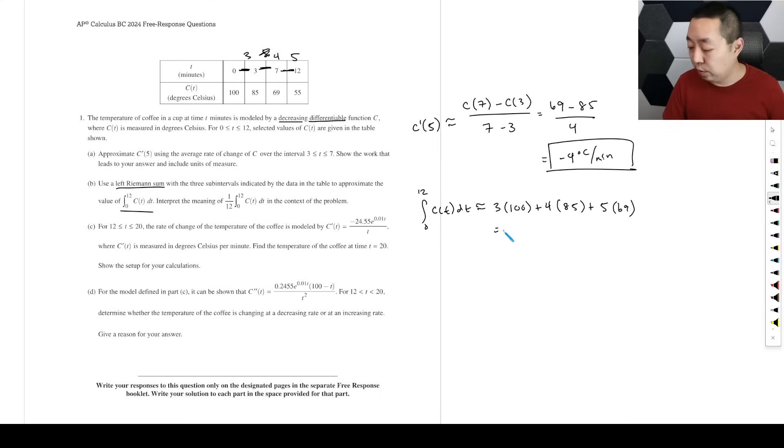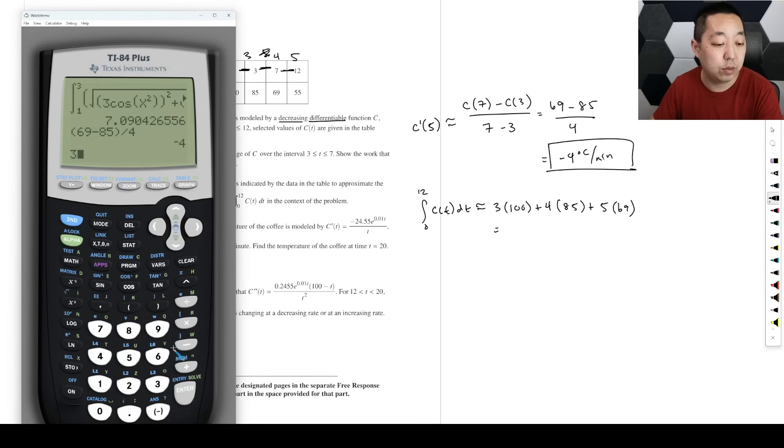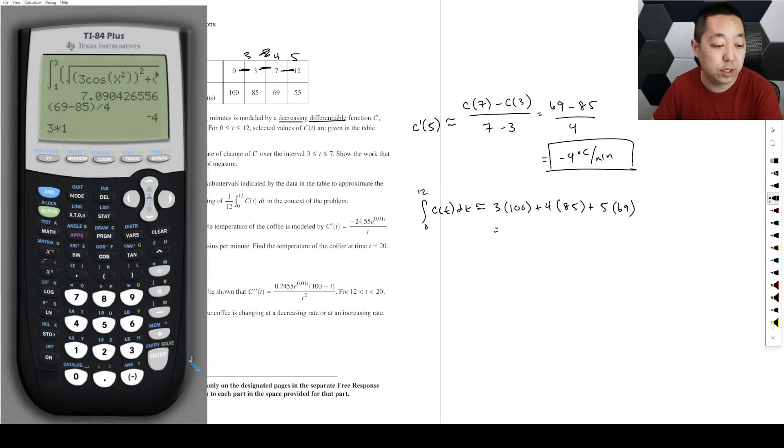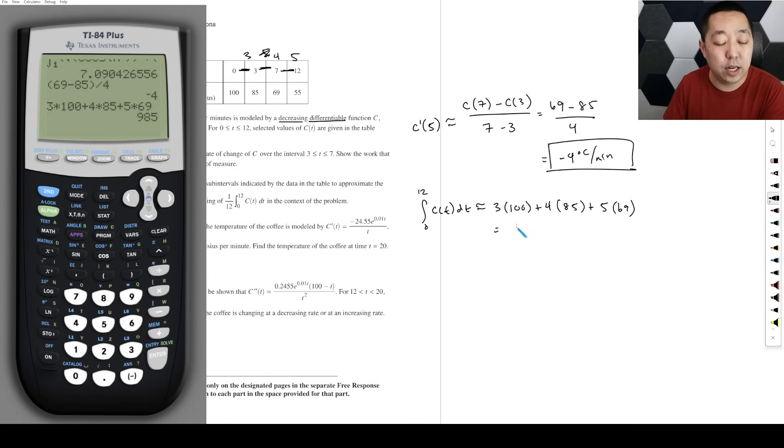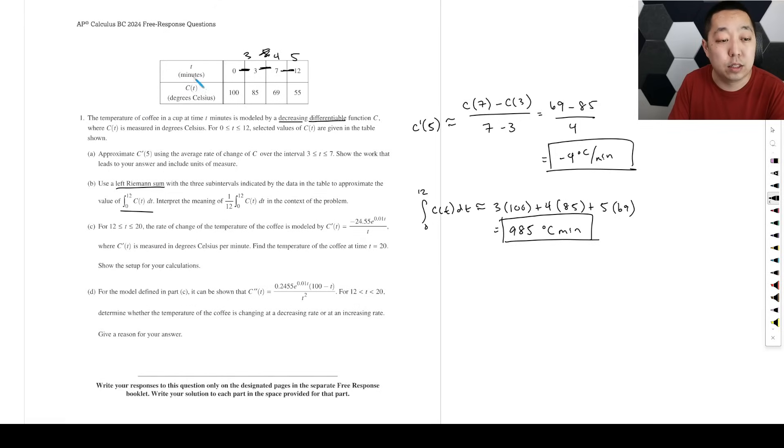And then interval width is 5, and the left value is 69. When we do that, we can use our calculator: 3 times 100 plus 4 times 85 plus 5 times 69. That's 985. The integral, the units of this—because this is degrees Celsius, this is minutes, this is degrees Celsius minutes. I don't know if they would actually require units on here, but that is what the integral value and the units are going to be, the product of those two, degrees Celsius times minute.